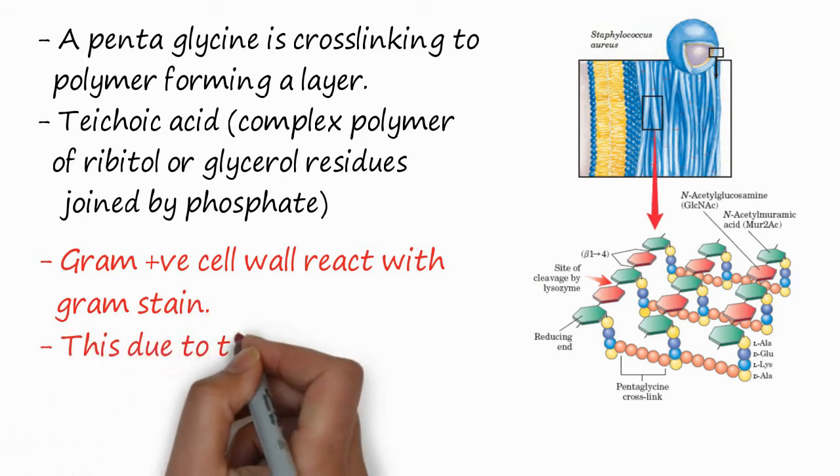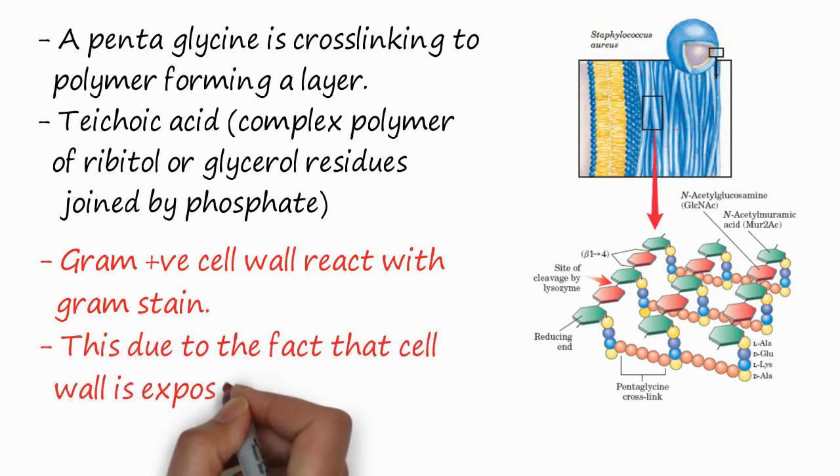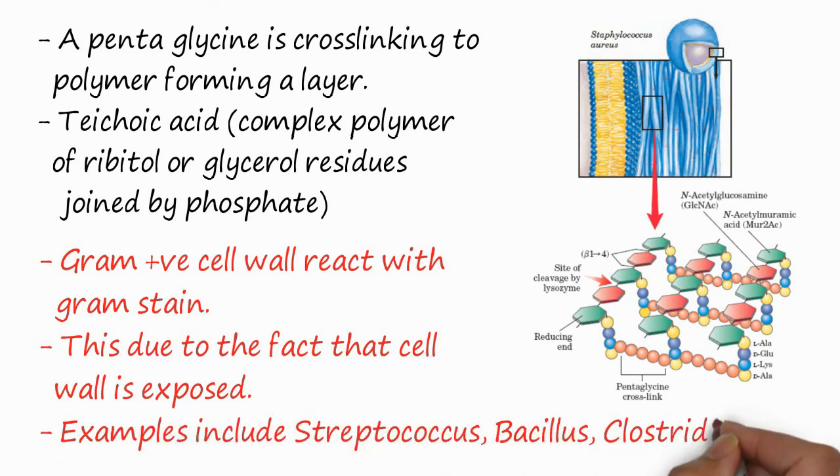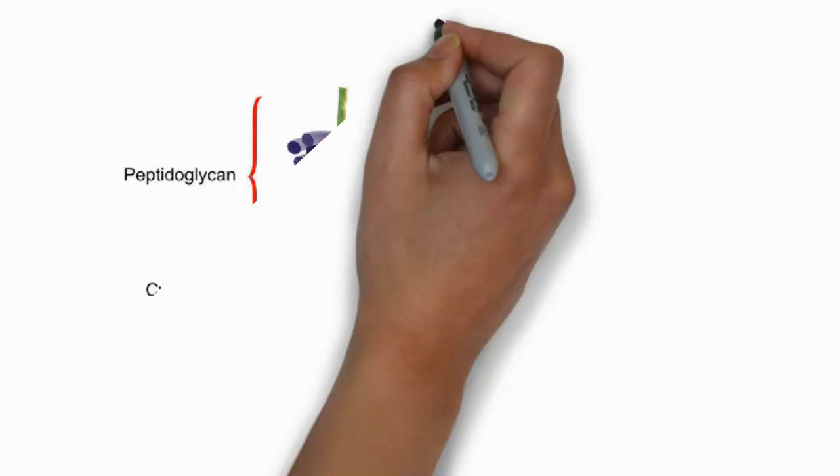Gram positive cell wall reacts with gram stain. This is due to the fact that the cell wall is exposed outside. Examples of this type of bacteria include Streptococcus, Bacillus, and Clostridium.